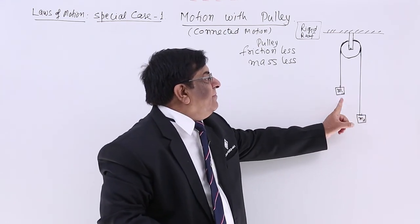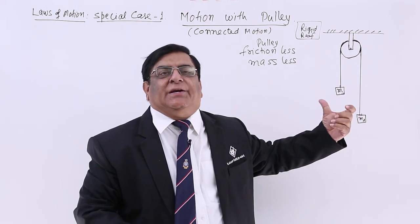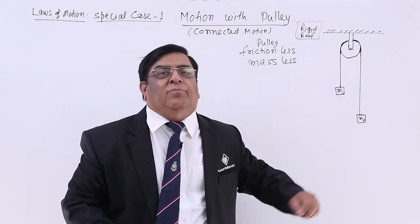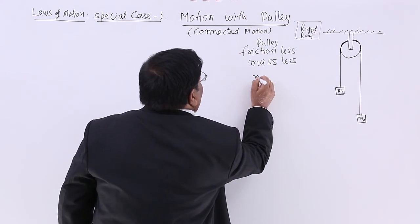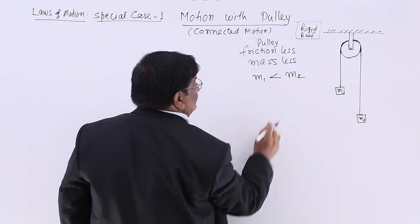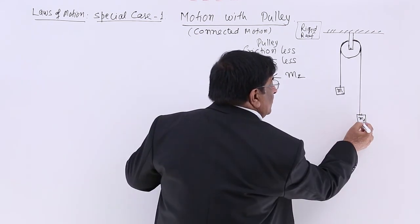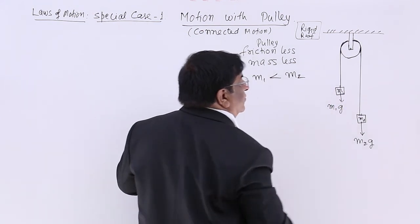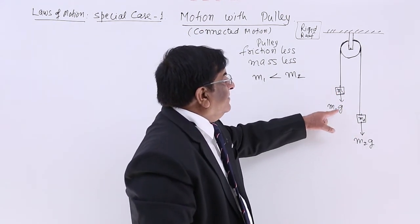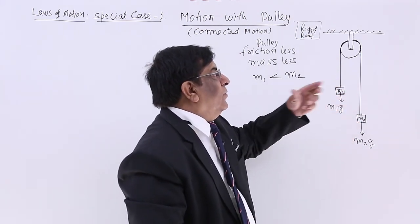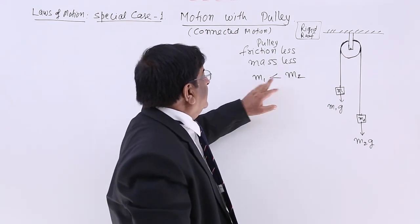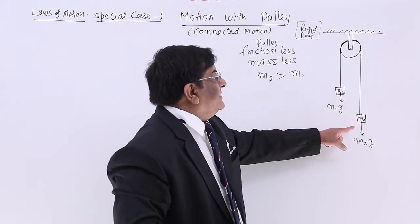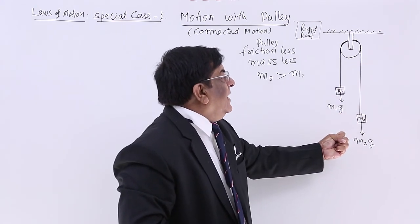Now, will this system remain in equilibrium or will it move? The answer depends: if M1 and M2 are different in mass, their forces will be different and the system will move. Suppose M1 is less than M2 — both are being pulled by Earth's gravitational force. Since M2 is larger than M1, the force on M2 should be more and it should move downward.